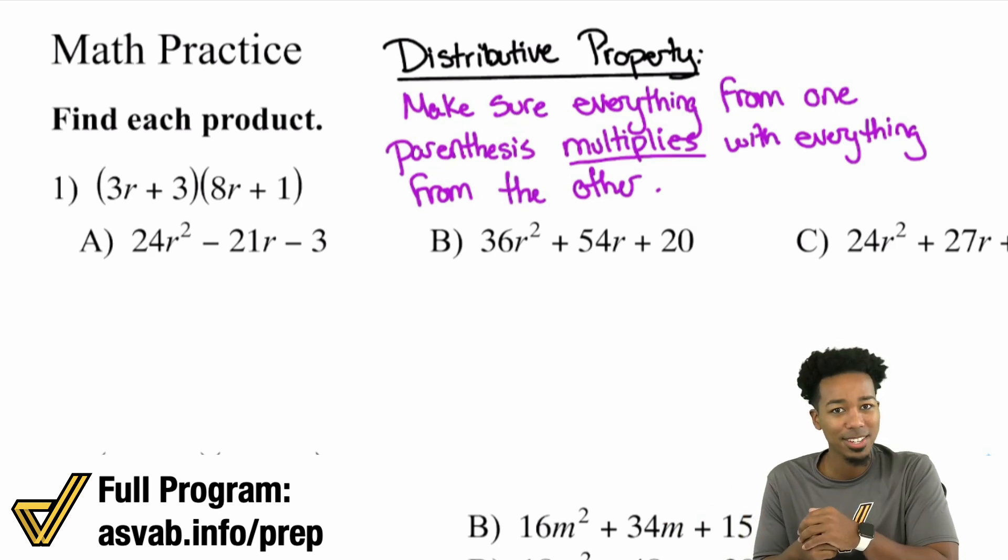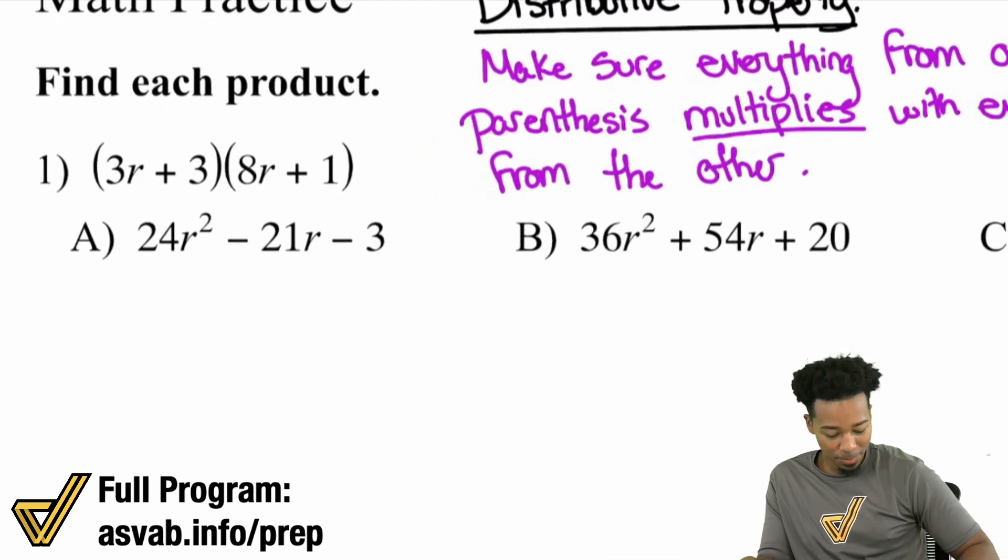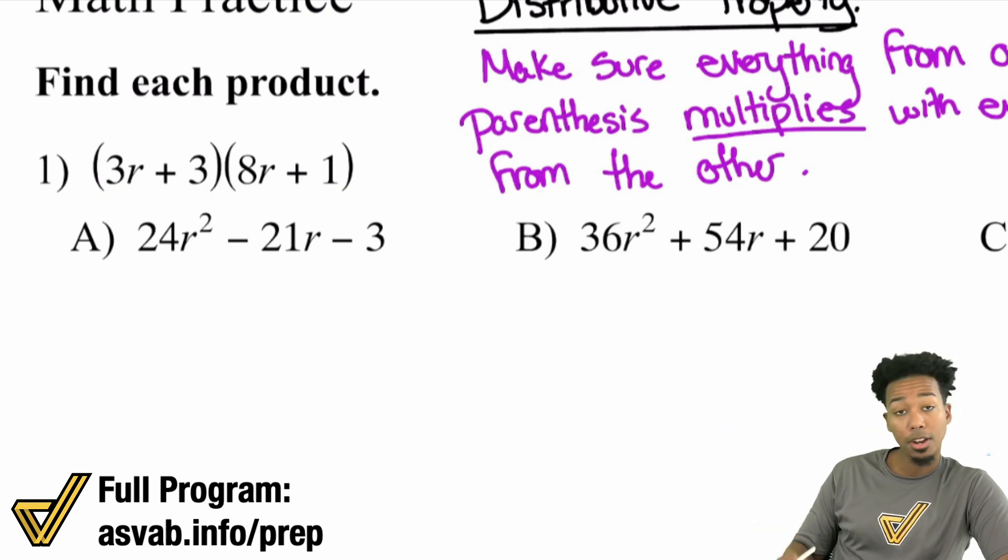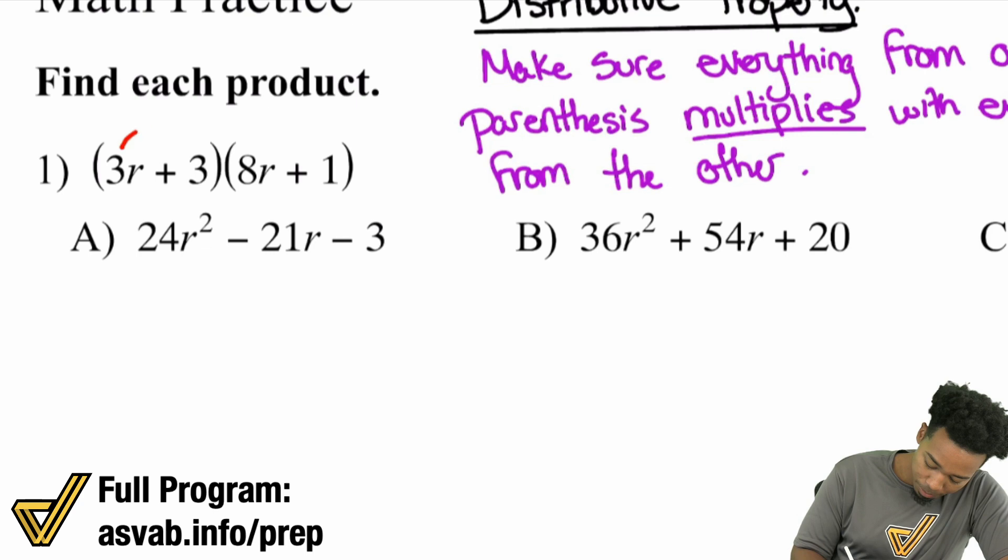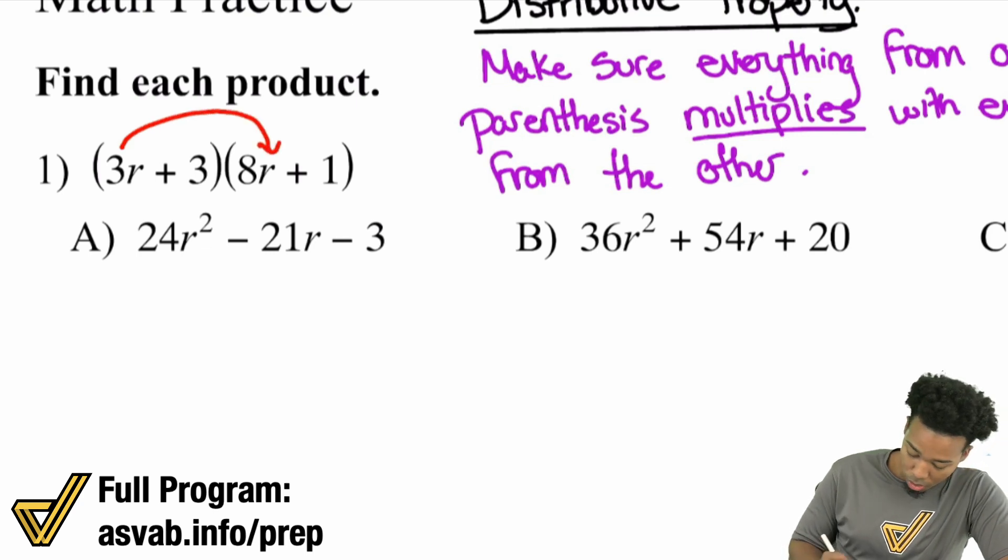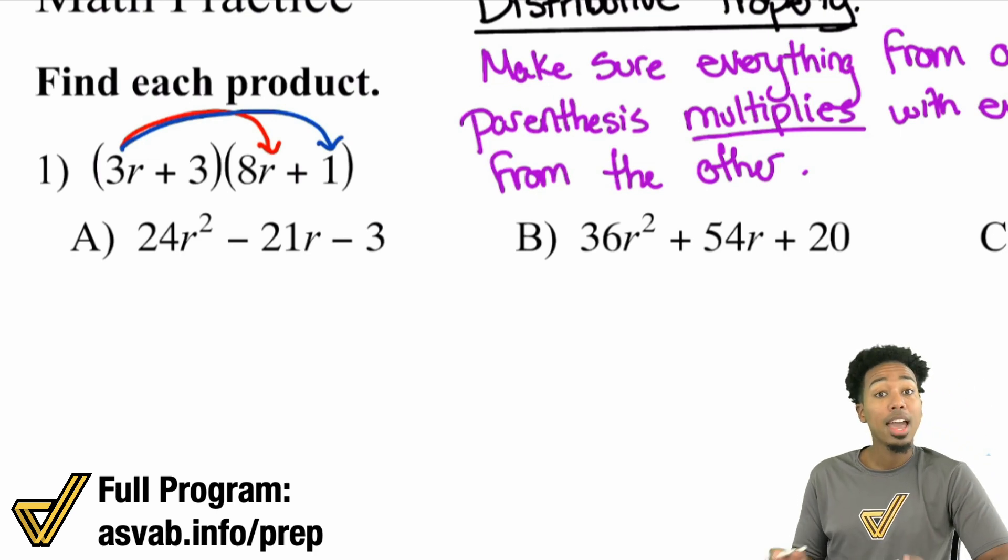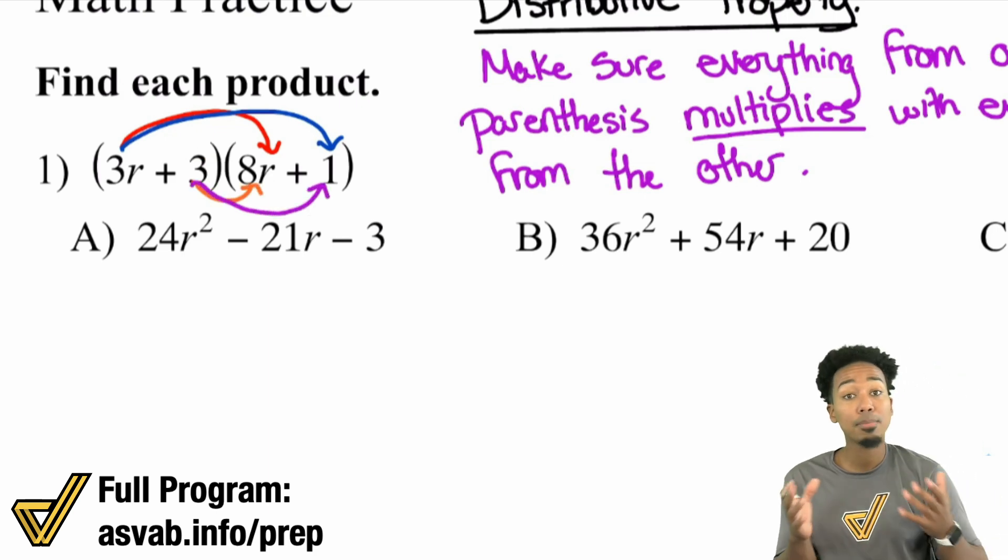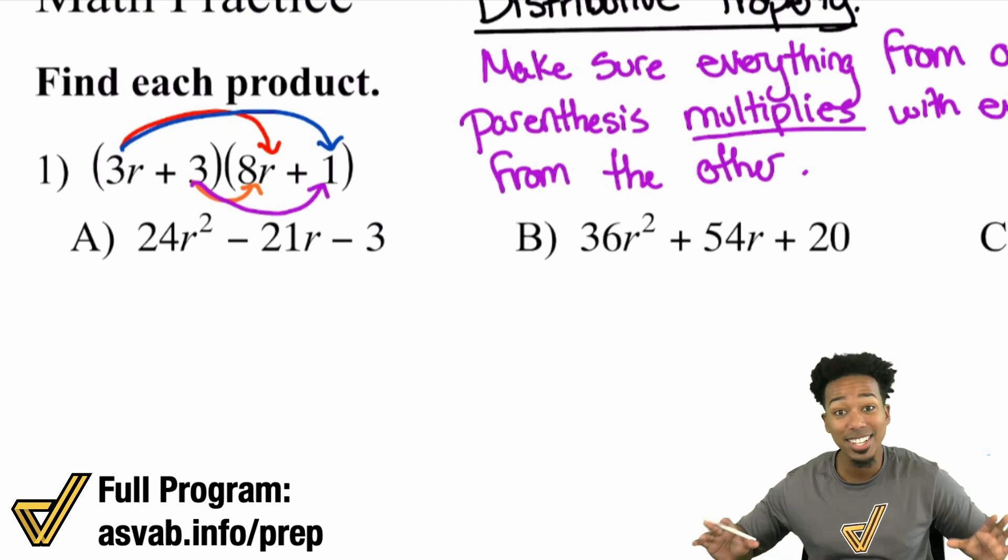Make sure everything from one parentheses right there multiplies with everything from the other. It's seriously straightforward. You can't miss it. Now again, I'm teaching you the general surefire way that this will always work. When you learn techniques like foiling or techniques like the box method or anything else, those are all shortcuts of the same exact idea. But I don't want you to learn shortcuts if you don't know how to do it the regular way.